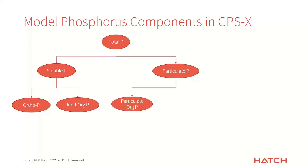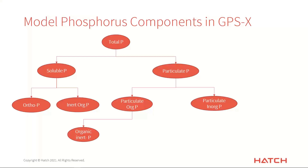The particulate P breaks down into particulate organic and inorganic phosphorus. The particulate organic phosphorus has a part associated with inert COD that passes through the plant without being affected by the biology — parameters you can adjust in the influent characterization. We also have the stuff associated with the biomass: poly-P, which is the form of phosphorus stored and removed through the bioP process, and biomass P, which is phosphorus taken up as a nutrient for growth — not only by the PAOs but by all biomass in the activated sludge process. Even regular heterotrophs take up a small amount of phosphorus when they grow.